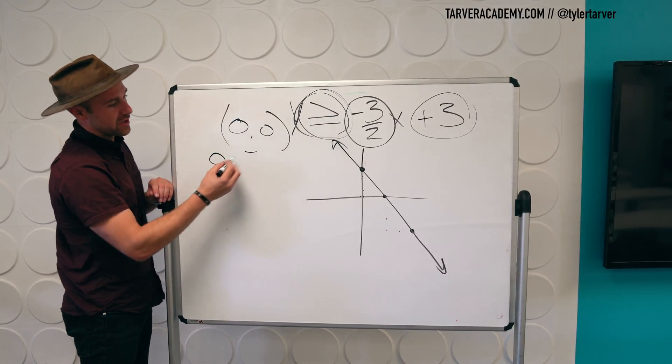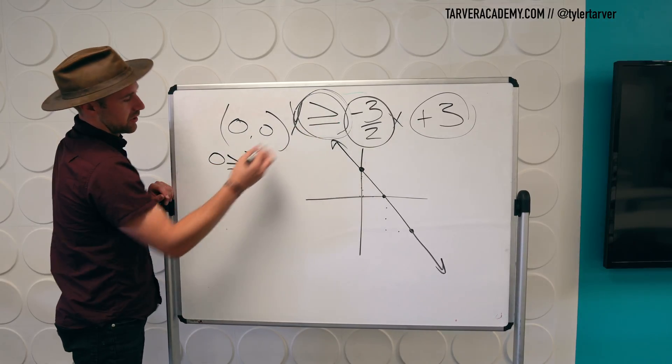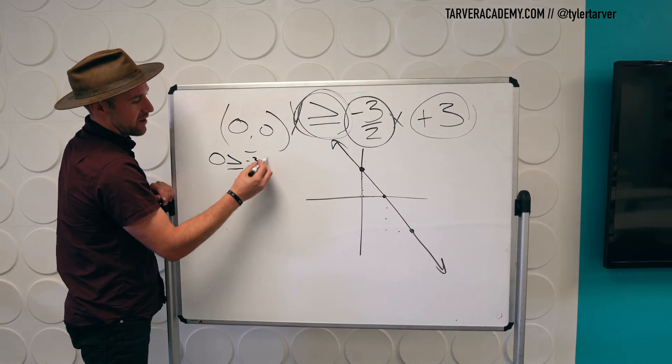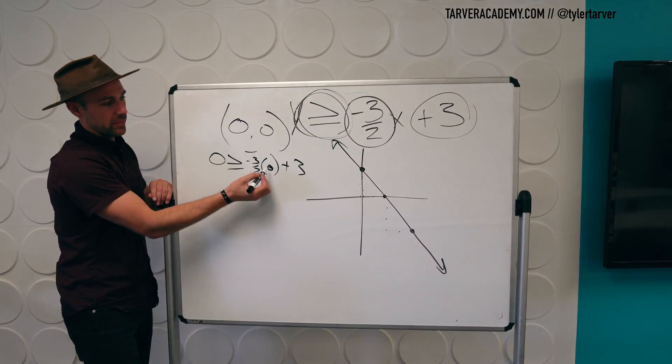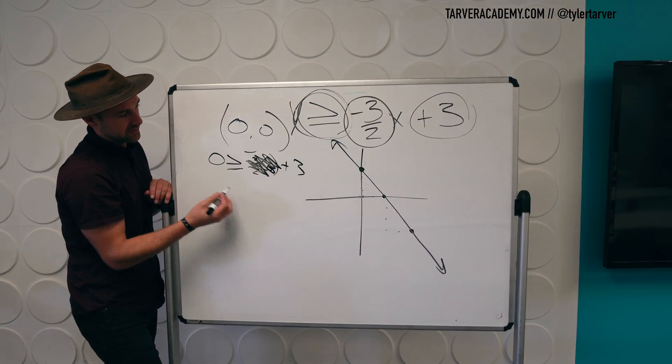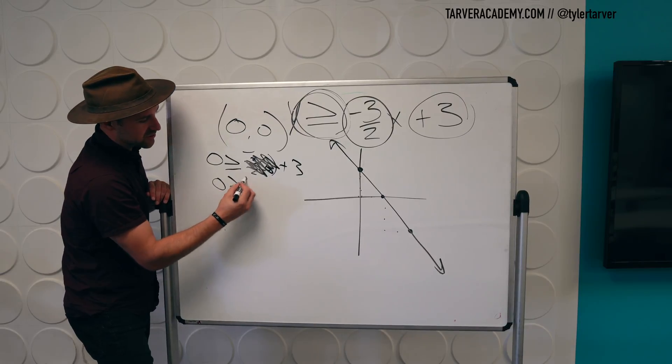So instead of y, I put zero greater than or equal to negative three over two, which doesn't matter because I'm multiplying times zero for X plus three. This cancels out. It's false. Zero is greater than or equal to three.